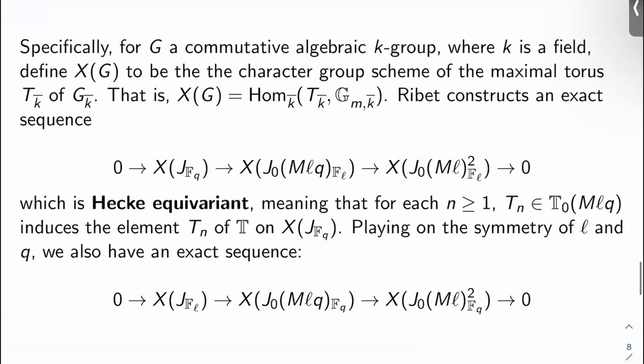So specifically, concretely, if G is a commutative algebraic k-group where k is a field, let's define X(G) to be the character group scheme of the maximal torus T_{k̄} of G_{k̄}. So G_{k̄} is the base change to the algebraic closure of k. That is, X(G) is the k̄ maps from T_{k̄} to the multiplicative group G_{m,k̄}. Ribet constructs an exact sequence from 0 to X(J_q) to X(J_0(Mℓq) mod ℓ) to X(J_0(Mℓ)² mod ℓ) to 0, which is Hecke equivariant, which means that for each n, the Hecke operator here,